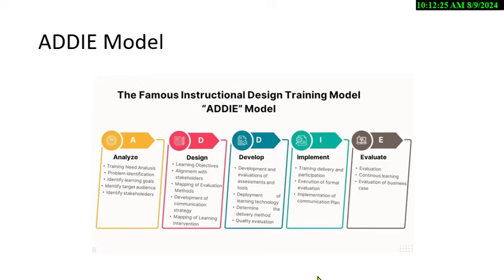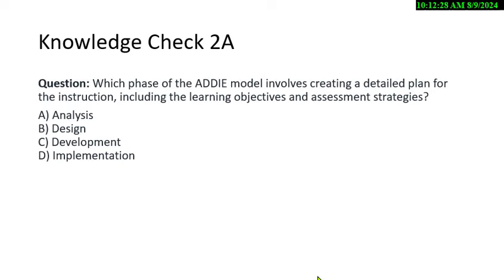They're now asking people about the ADDIE model. Sample question: Which phase involves creating a detailed plan for instructions including learning objectives and assessment strategies? Options: A) Analysis, B) Design, C) Development, D) Implementation. The answer is B — Design. You're creating the plan, and that's designing the plan. These are tough questions that require you to think carefully about each step.